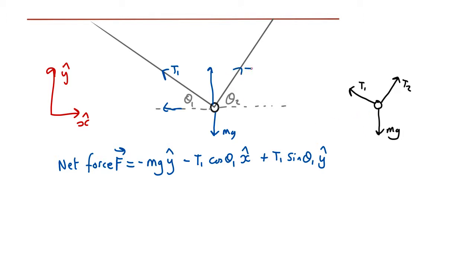And we can similarly break up tension 2. It's going to have a component along here and a component upwards. And the component along here is going to be plus T2 cos theta 2 in the plus x direction. And we're going to get a plus T2 sin theta 2 in the plus y direction.